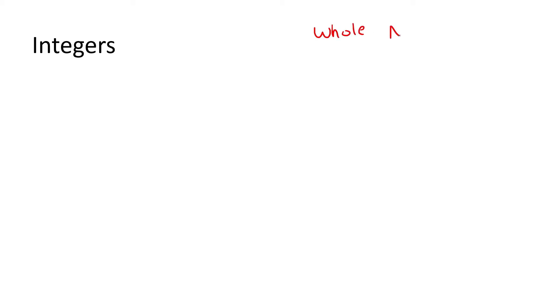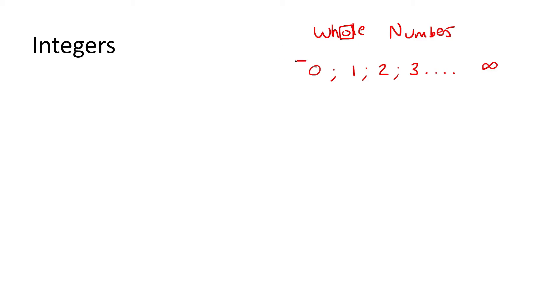So do you remember when we looked at what whole numbers are? With whole numbers, they are the numbers that start at zero, and then they just go one, two, three, and then all the way up to positive infinity. So they don't go beneath zero. They don't go negative. Those are whole numbers.